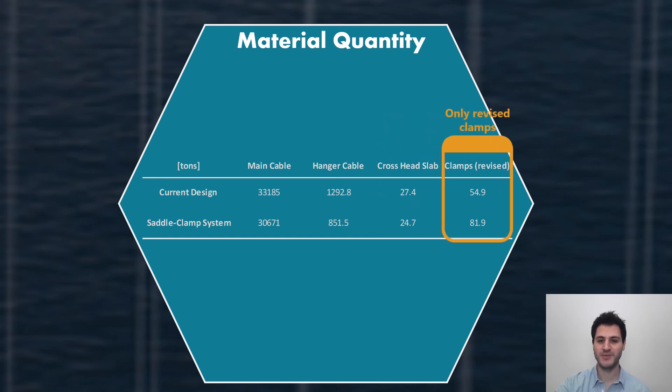Clamps of the system are the only type of cable elements that have higher material quantity. Only revised clamps are compared in the table and when all clamps are considered, it has a minor effect on general contribution of material quantity. Although it's not included in the quantity calculations, sockets and pin attachments that are used to connect hanger cable to a typical clamp are not required for the saddle clamp system.